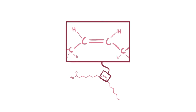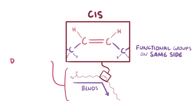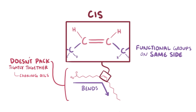Looking at the double bond of an unsaturated fatty acid, like most unsaturated fats, it's got a cis configuration. In a cis configuration, the two functional groups are on the same side of the double-bonded carbons. When this happens, the fatty acid chain naturally bends. A molecule that bends does not pack tightly together, so it's a lot more fluid. Think about cooking oils, which are liquid at room temperature.